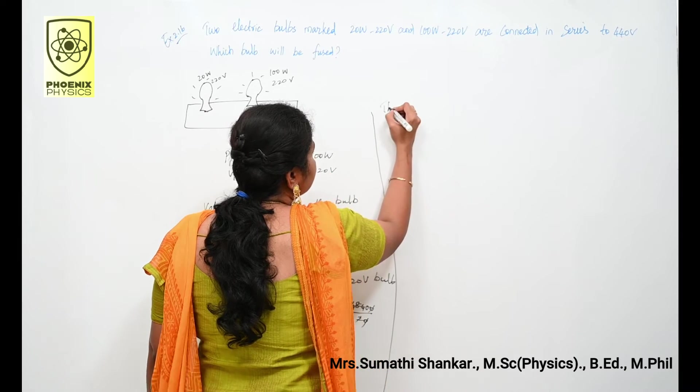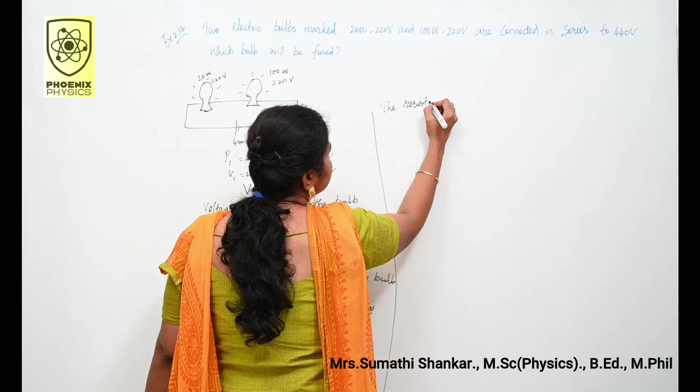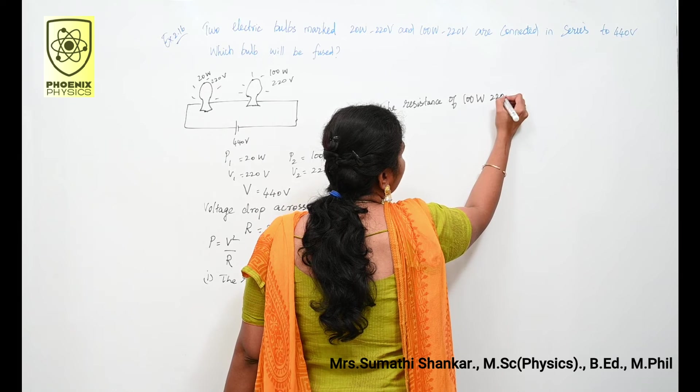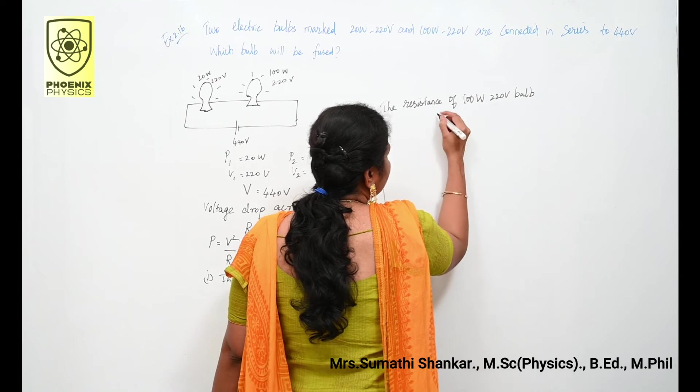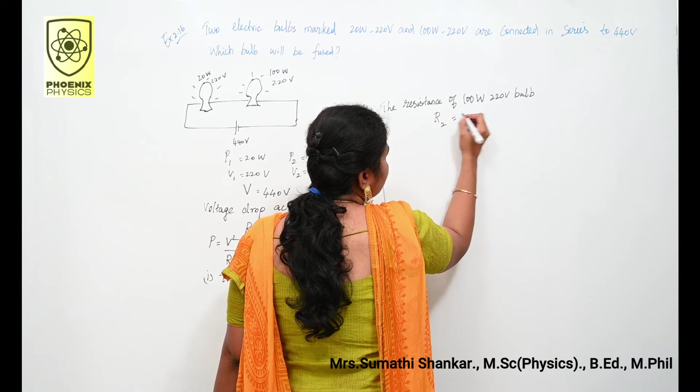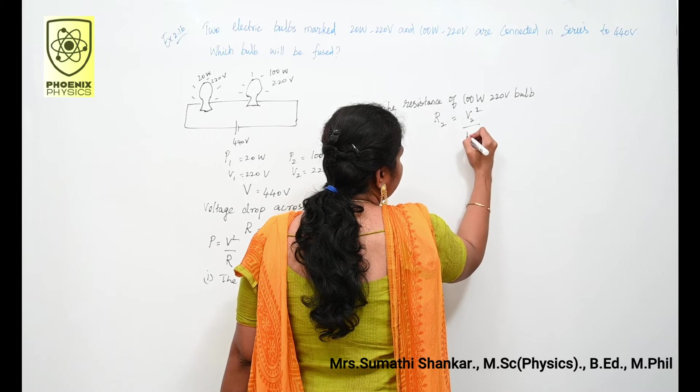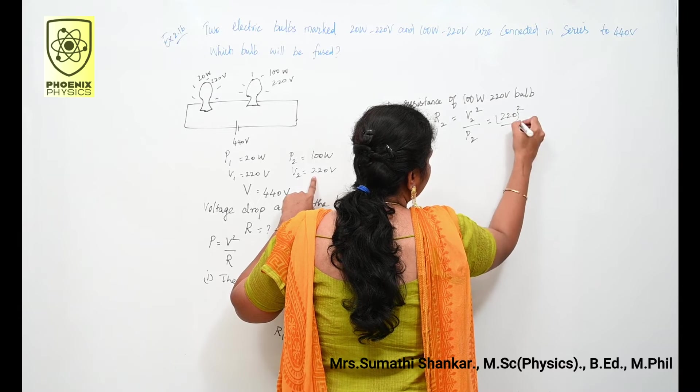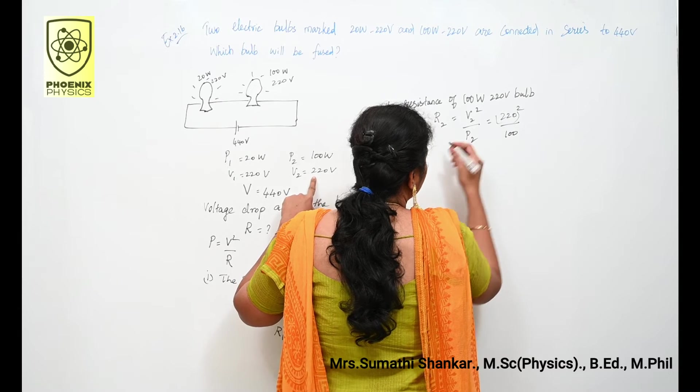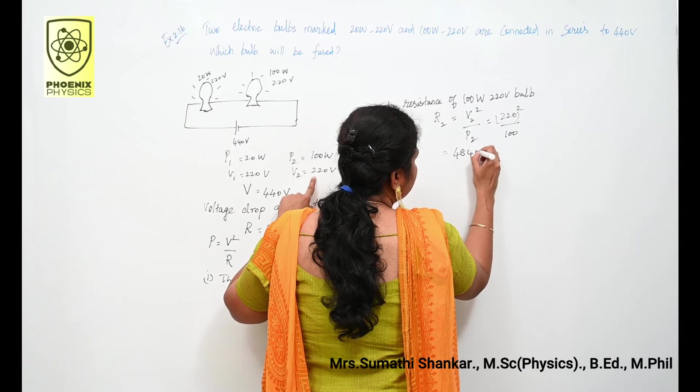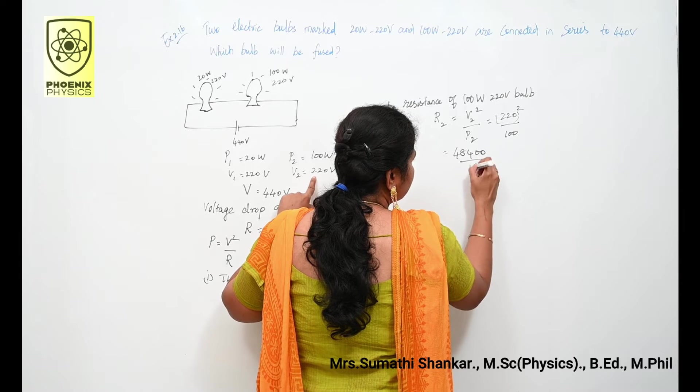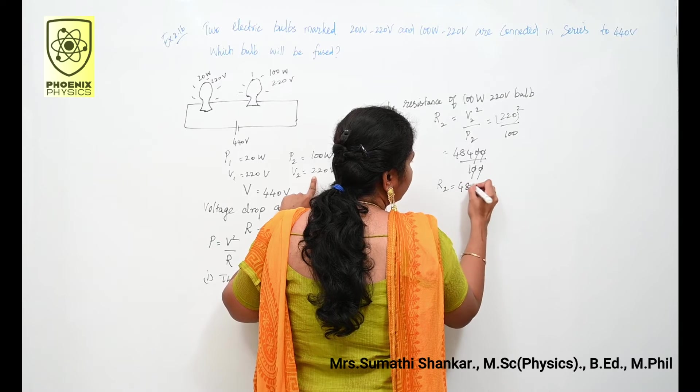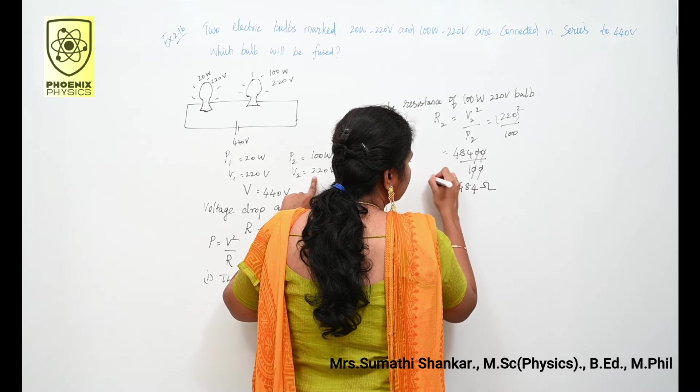Next I am going to calculate the resistance for 100 watt 220 volt bulb. You take it as R2. R2 is equal to V2 square divided by P2. What is V2? That is 220 the whole square divided by 100. 48400 divided by 100, R2 is equal to 484 ohm.